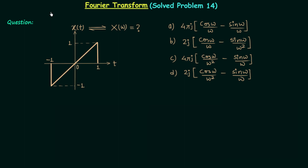In this lecture we will solve one important question. This question is important because we will calculate the Fourier transform using the method of differentiation when the given time domain signal is a combination of both ramps and steps. After calculating the Fourier transform using this method, I will give you a short trick to solve this question. So let's move to the solution.